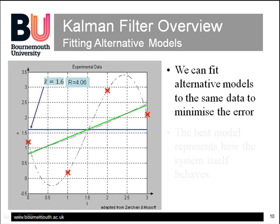If we think the aircraft is climbing at a steady rate, our best guess is to fit a straight line through the data points, just as in the last slide. This gives the green line, showing how the aircraft climbs from around 800 meters to 2.4 kilometers within our measurement time frame, with model x-hat equal to 0.79 plus 0.54t, and an improved residual of r equals 2.61, signifying a better fit.